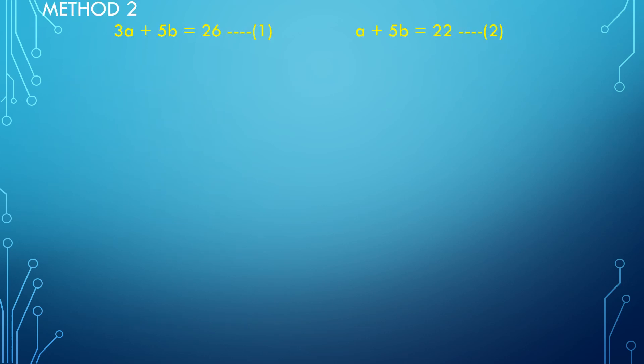Now we will see the solution of the simultaneous equation by substitution method. 3A plus 5B equal to 26 is equation number 1. A plus 5B equal to 22 is equation number 2. We can rewrite equation number 2 as A equal to 22 minus 5B — taking 5B to the right side, plus becomes minus. This is equation number 3.